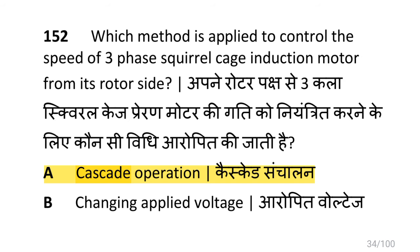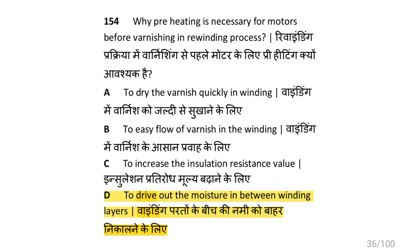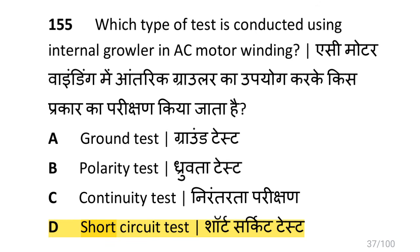The method applied to control the speed of a three phase squirrel cage induction motor from its rotor side is cascade operation. The loss determined by the blocked rotor test is copper loss. Preheating is necessary before varnishing in rewinding to drive out moisture between winding layers.